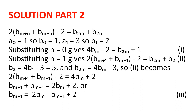We know that a(0) is equal to 1, so b(0) is equal to 1 minus 0, which is 1. And a(1) is equal to 3, so b(1) is equal to 3 minus 1, which is 2.